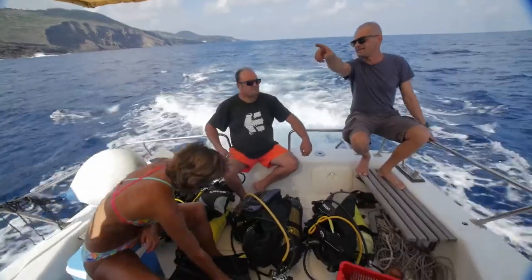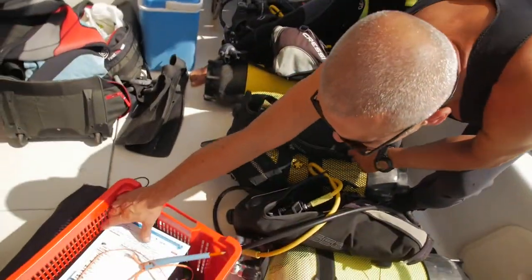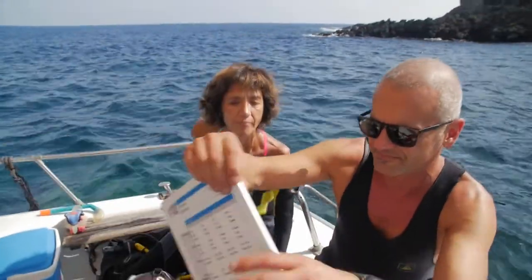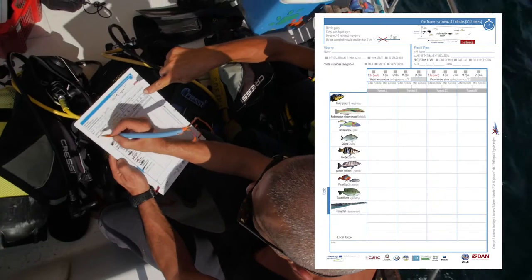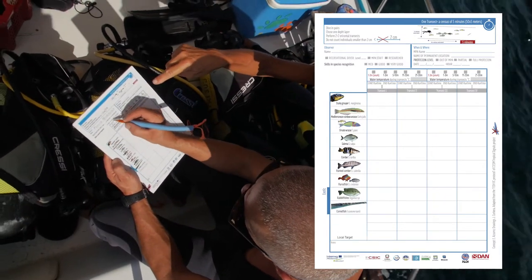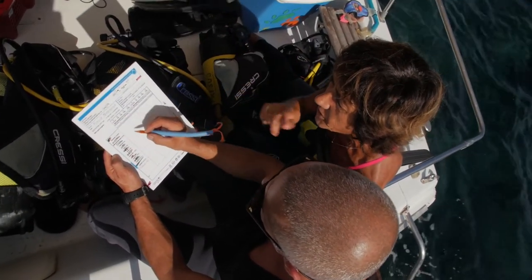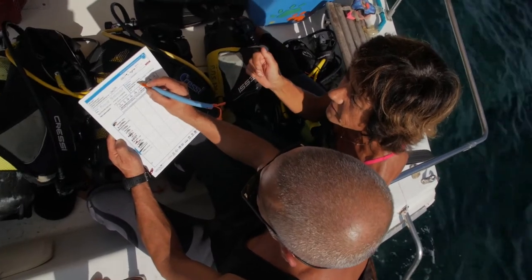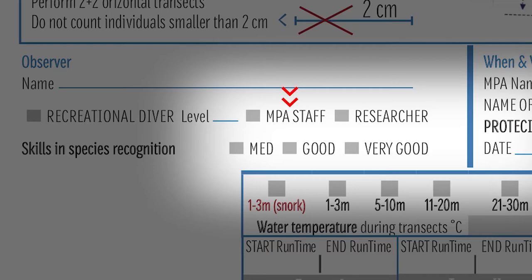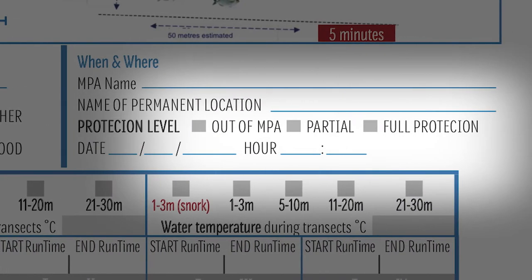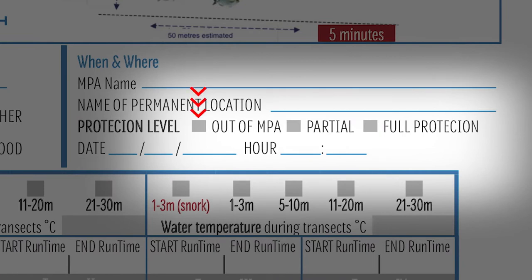Transects are performed by trained divers able to recognize and count fish species underwater. Data are collected through an underwater board. Before the dive, we will honestly assess our ability to recognize the target species: average, good, or very good. We will also indicate the protection level of our dive site: outside the marine protected area, partial, or integral.